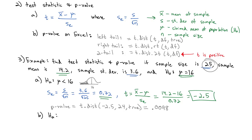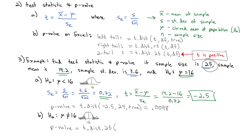If we change the alternate hypothesis to mu not equal to 16, the test statistic remains the same — standard error 0.72, t = negative 2.5. But for a two-tailed test, we use T.DIST.2T. Remember, the t must be positive, so we enter positive 2.5 with degrees of freedom 24. When we do that in Excel, we get a p-value of 0.0197.